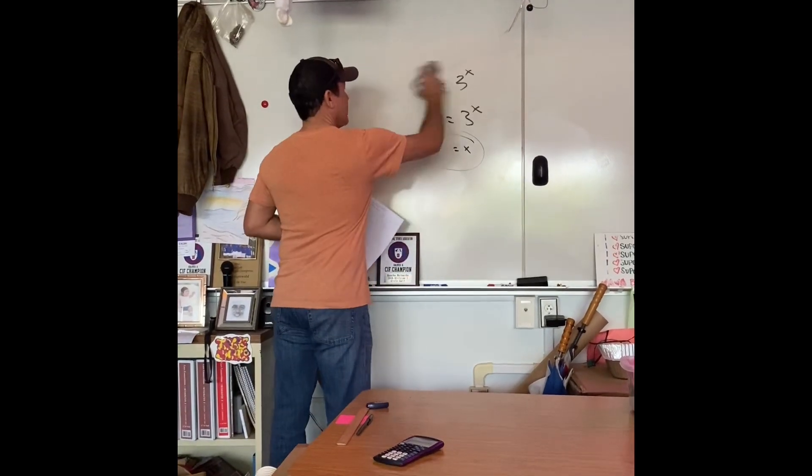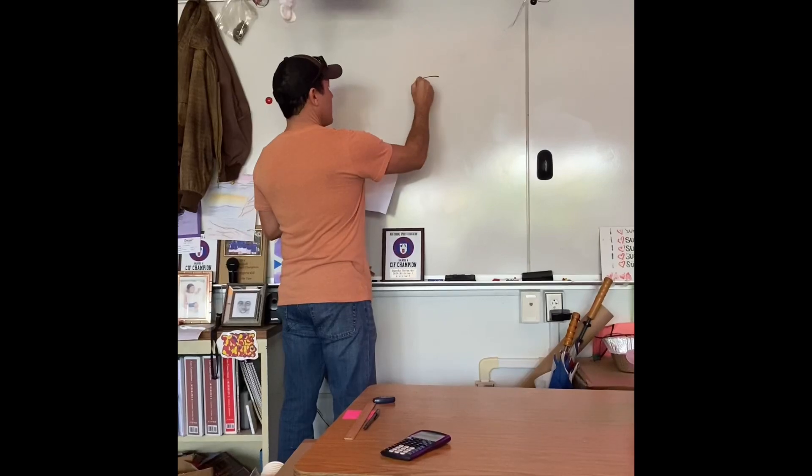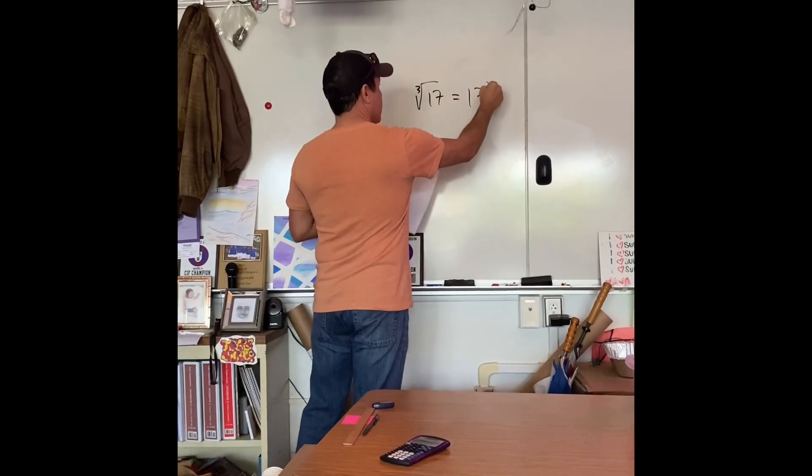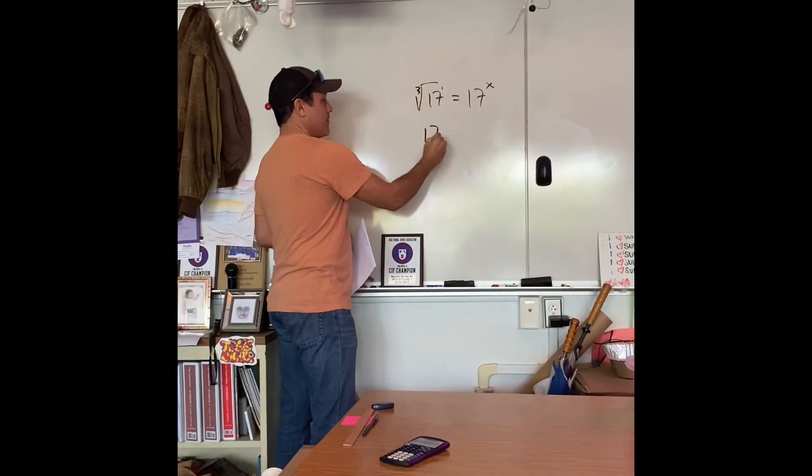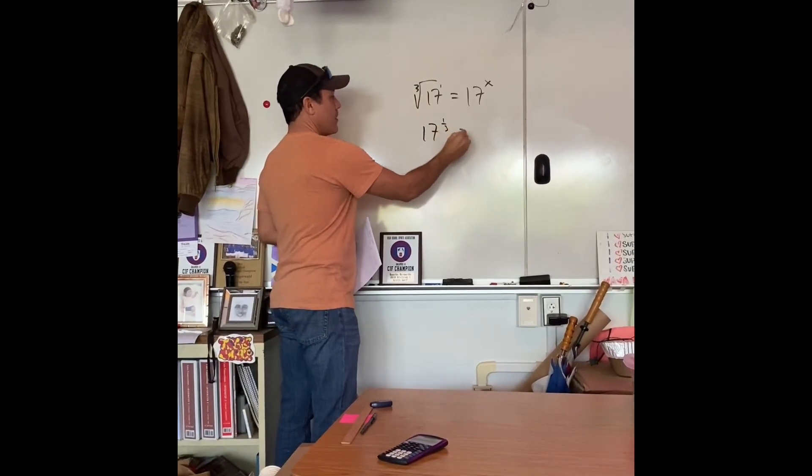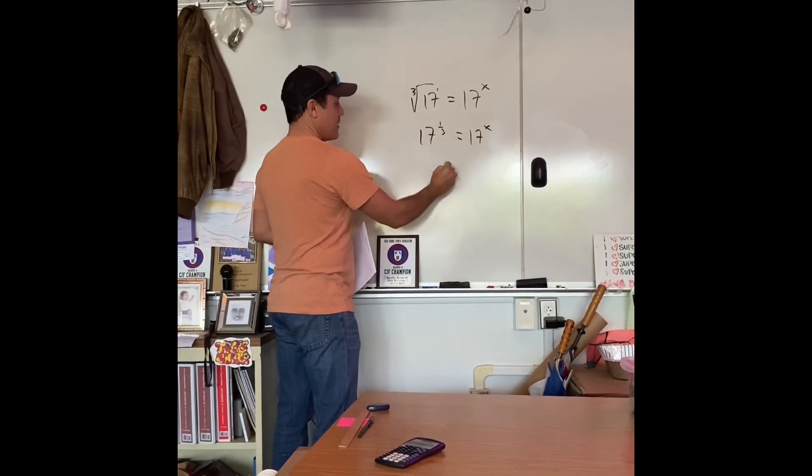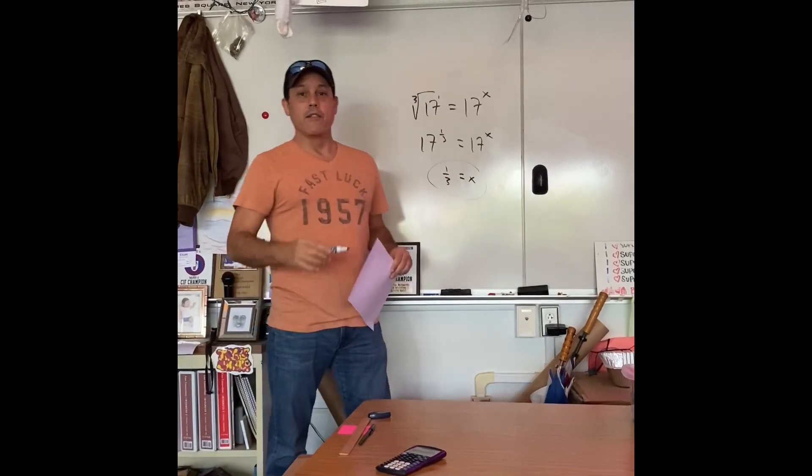Let's do one more. Now, what if we have the cubed root of 17, okay? Well, again, we've got 1 there. 17 to the 1 third equals 17 to the x. Same base, x equals 1 third.